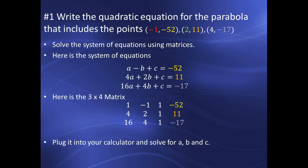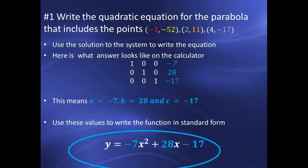Then you would use that matrix to solve for A, B, and C. When you do, you're going to get a matrix that looks like this with ones on the diagonal. It means that A is negative 7, B is 28, and C is negative 17.